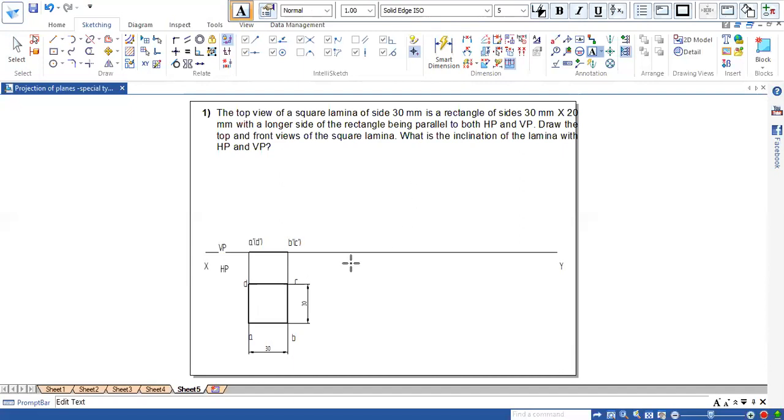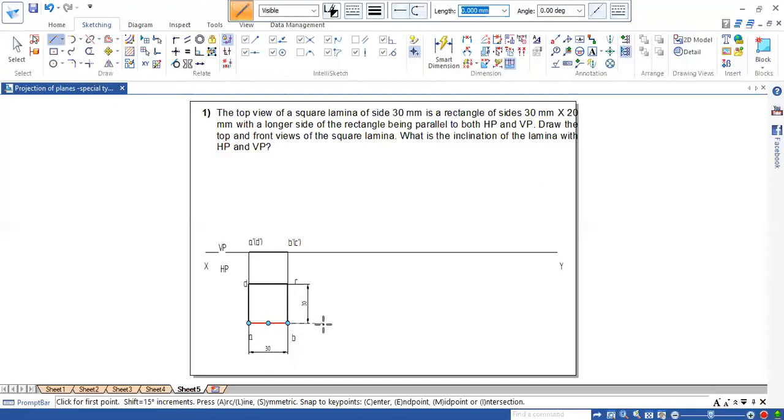Second position, instead of giving inclination with respect to HP, he has given information that the top view will appear as a rectangle. This is a rectangle of 30 by 20 mm. With one of longer side of the rectangle parallel to HP. Here AD is parallel or resting on HP. So that edge again, so this should be 30 mm. So other side is 20. So the square looks like a rectangle in the second position.